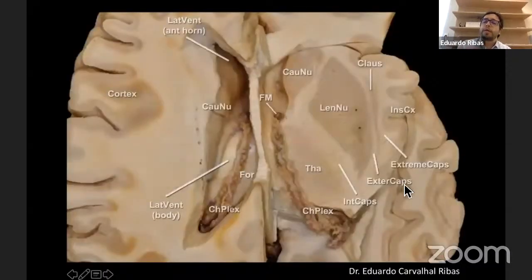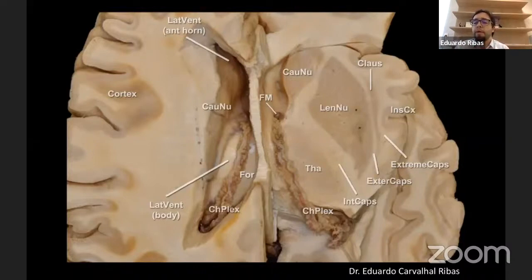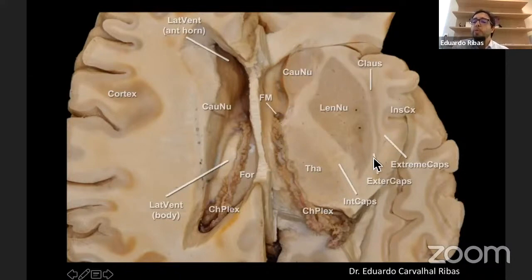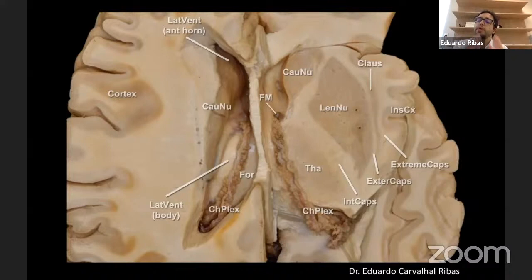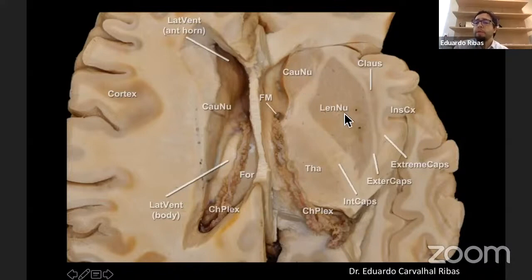Even deeper inside the frontal lobes, there are other tracts, but these are really intermingled together. To understand them, it is easiest to begin at the insular lobe, because deep inside the insula we have the basal ganglia, which divides these tracts into capsules. Following these capsules superiorly, they enter the frontal lobe. At the central core, nature has already separated them via the basal ganglia, but at the frontal lobe they come together.